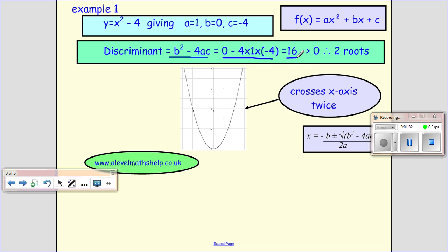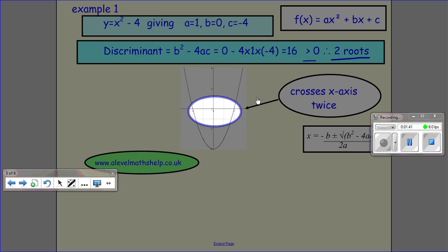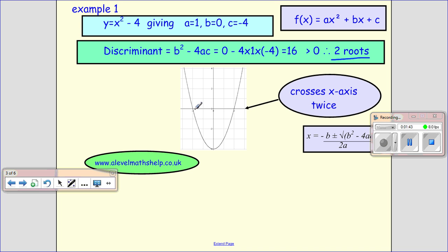and we get 16, which is positive. That means it's bigger than 0, so we get two real distinct roots. And that means we cross our x-axis in two places. So we've got two solutions when f(x) equals 0.